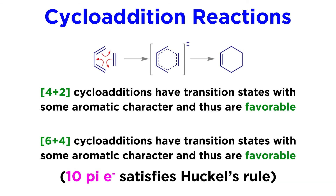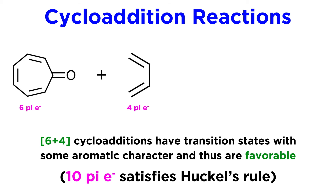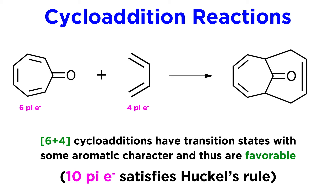What this also means is that other cycloadditions with transition states that satisfy Hückel's rule are also feasible. For example, 6+4 cycloadditions are acceptable. Take the following example with a 7-membered ring and our familiar butadiene — we get a new 10-membered ring instead of the usual 6-membered ring from the Diels-Alder, which does not have tremendous utility in synthesis but is a fascinating possibility nonetheless.